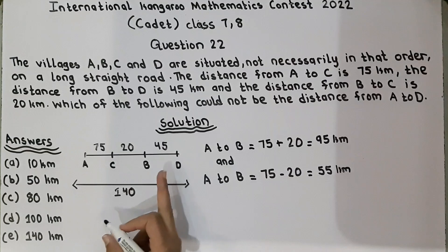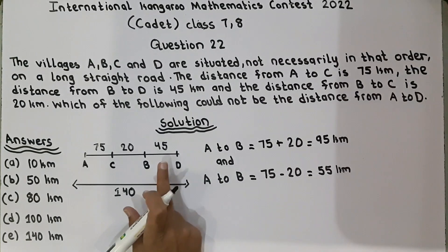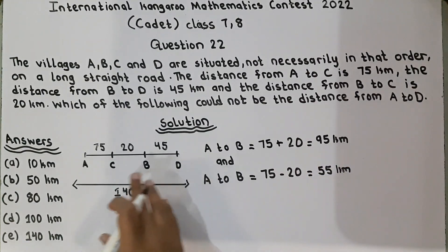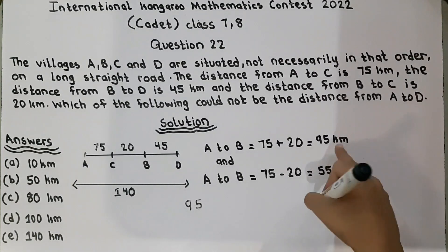So, 75 plus 20 is equal to 95 kilometers and 75 minus 20 is equal to 55 kilometers. Now, we are left with this. Now, we will use this to find the distance from A to D which is not a distance.